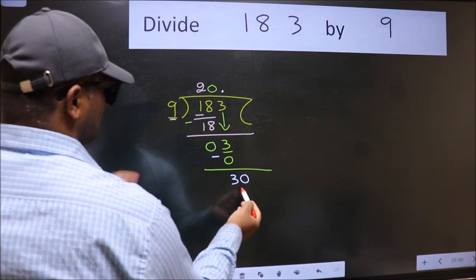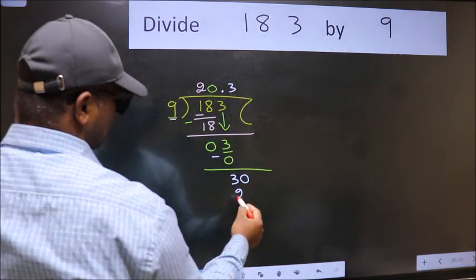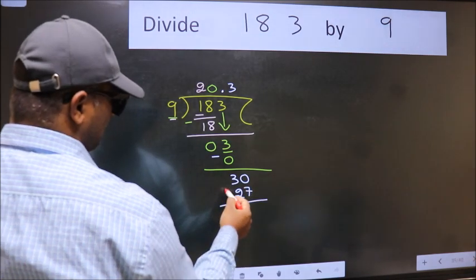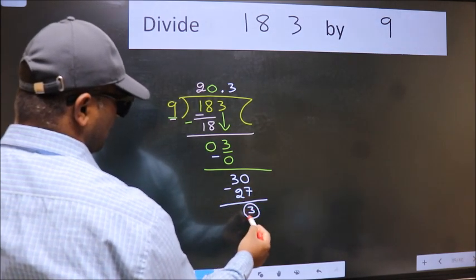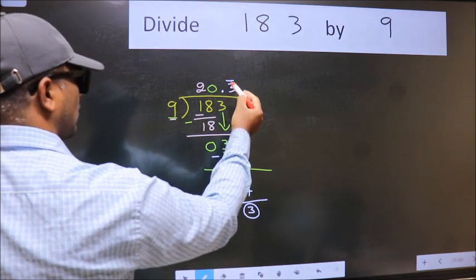So 30. A number close to 30 in 9 table is 9, 3 is 27. Now we subtract. We got 3 again. That means we get bar on this number.